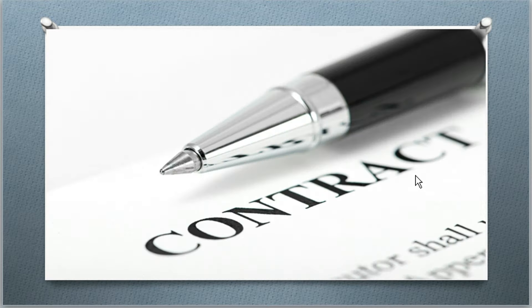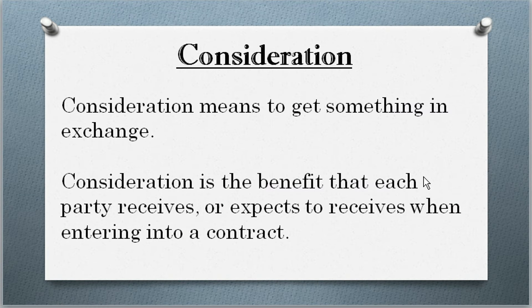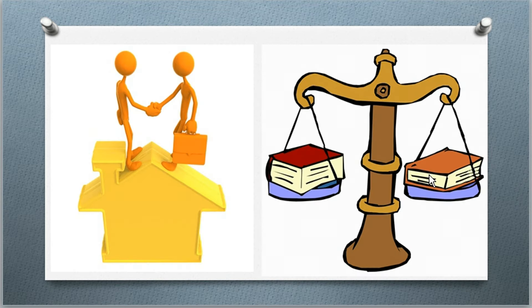Consideration is the essential element of the contract. Where there is no consideration, there will be no contract. Simply, consideration means to get something in exchange. Consideration is the benefit that each party receives or expects to receive when entering into a contract. Both parties get benefit equally. This image shows clearly both the parties are equally beneficial in the consideration.